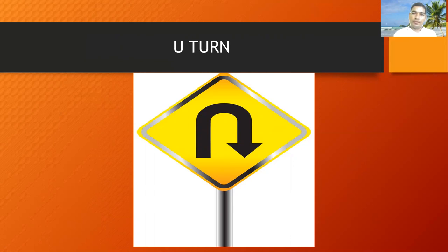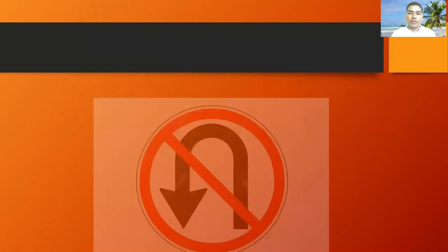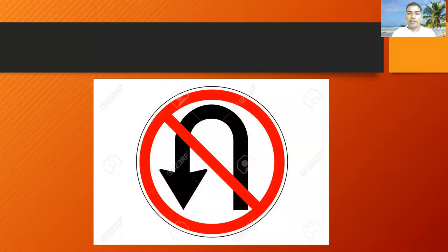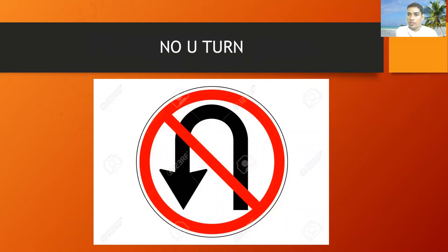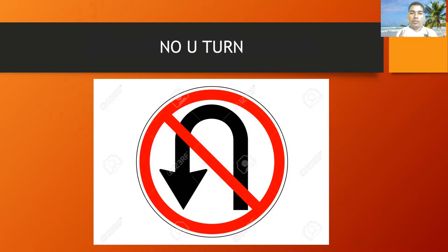Next, what sign means this? It has the same U-turn shape but with a red crossing line over it. If you see this type of road sign or traffic sign, you must understand it means no U-turn. Because if you go and you didn't see the sign and you try to U-turn, the road is blocked. So if you see this type of sign, you must understand: no U-turn.